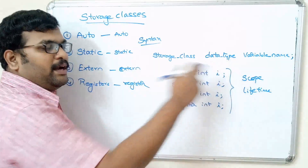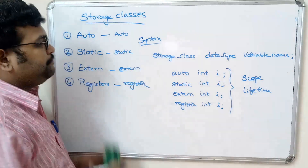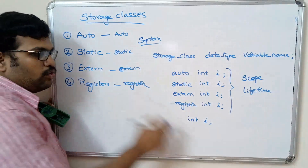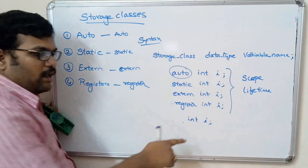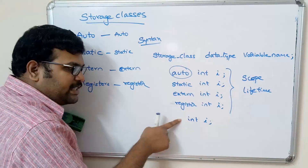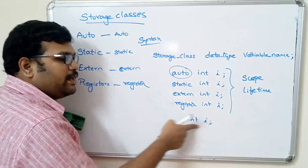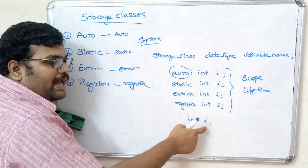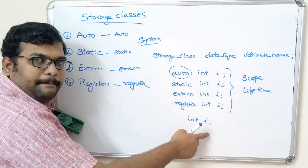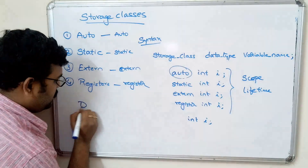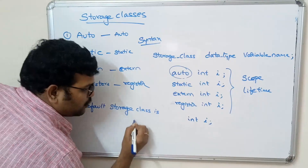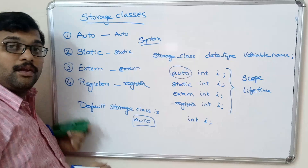Now let us see the scope and lifetime for auto, static, external, and register. If you simply declare int i without mentioning a storage class, the default storage class is auto — the compiler will automatically treat that variable declaration as an automatic variable. Note that all these keywords must be written in small letters: auto, static, extern, and register.